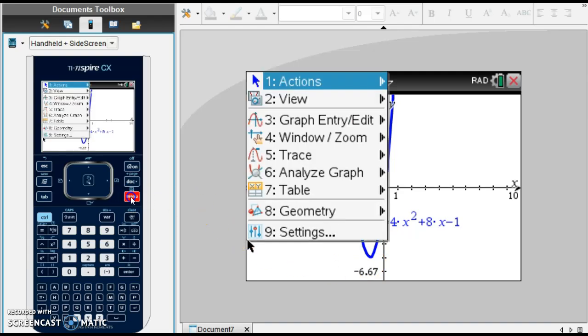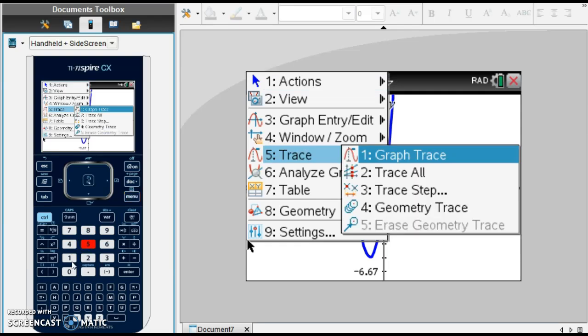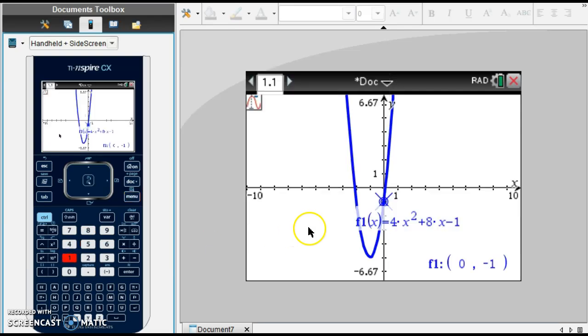So let's trace our graph. Menu, trace, graph trace. You can see my cursor showed up right here. And let's move it towards the bottom. There's our minimum.